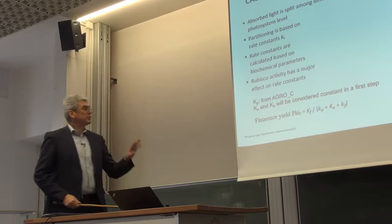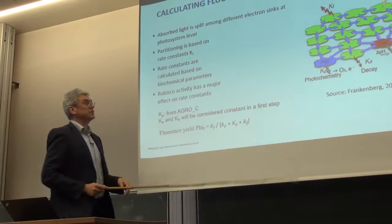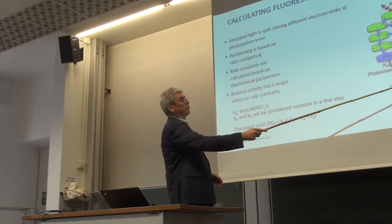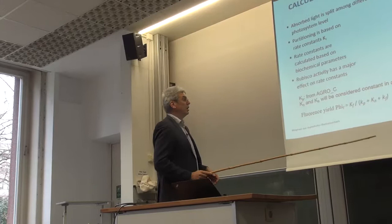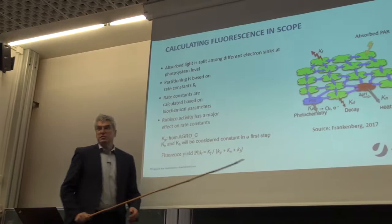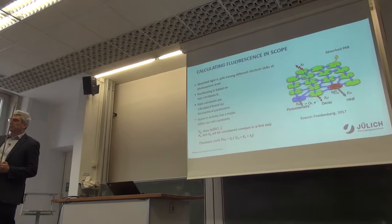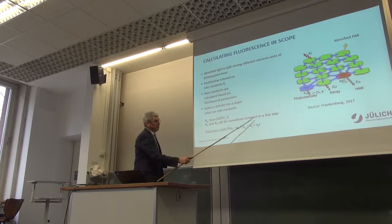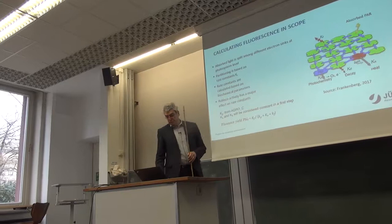Absorbed radiation is distributed into different energy fluxes: heat flux, photochemical decay, photochemistry, and fluorescence emitted from the system. These fractions should add up to one, but the difficulty is they are not constants — they depend on environmental conditions. The question is whether we can improve estimation of these partitioning coefficients.